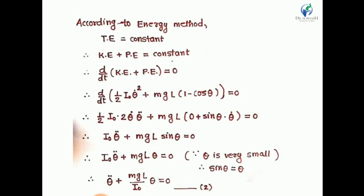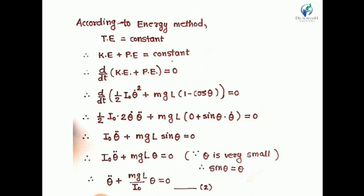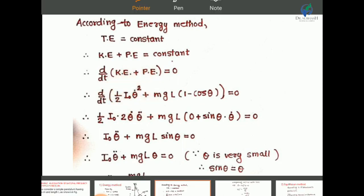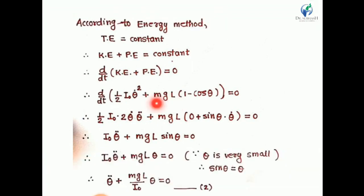According to the law of conservation of energy, total energy remains constant, so total energy equals kinetic energy plus potential energy equals a constant. If we take the differentiation of total energy with respect to time, we obtain zero: d/dt(KE + PE) = 0. Substituting: d/dt[½·IO·θ̇² + mgL(1 − cosθ)] = 0.